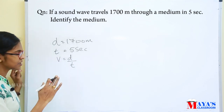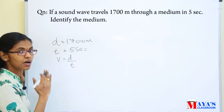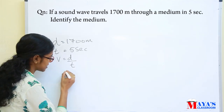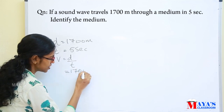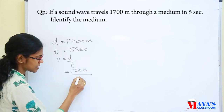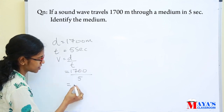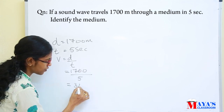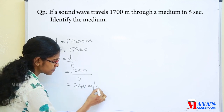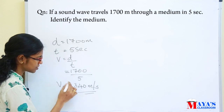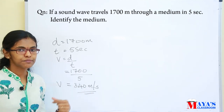We substitute the values into the equation. Distance is 1700 meters, time is 5 seconds. So that is equal to 340.